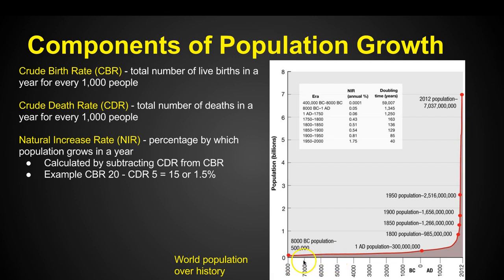Going back to 8,000 BC, we've got a very low population and it stays that way for a long time. It's only around the 1800s, where we see the effects of the Industrial Revolution, that the population starts to explode exponentially. As of when this book was published in 2012, our population is up to over 7 billion people.